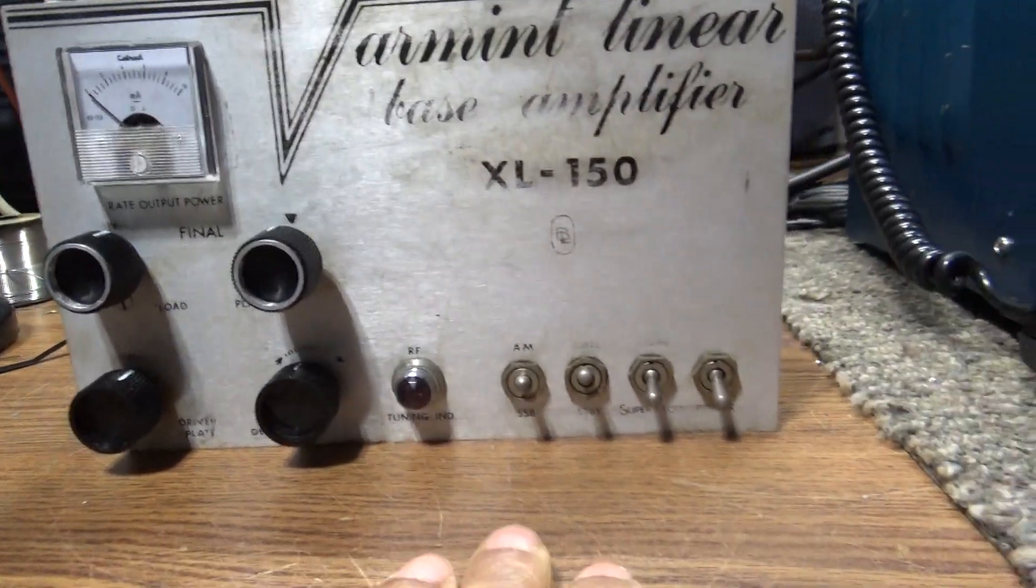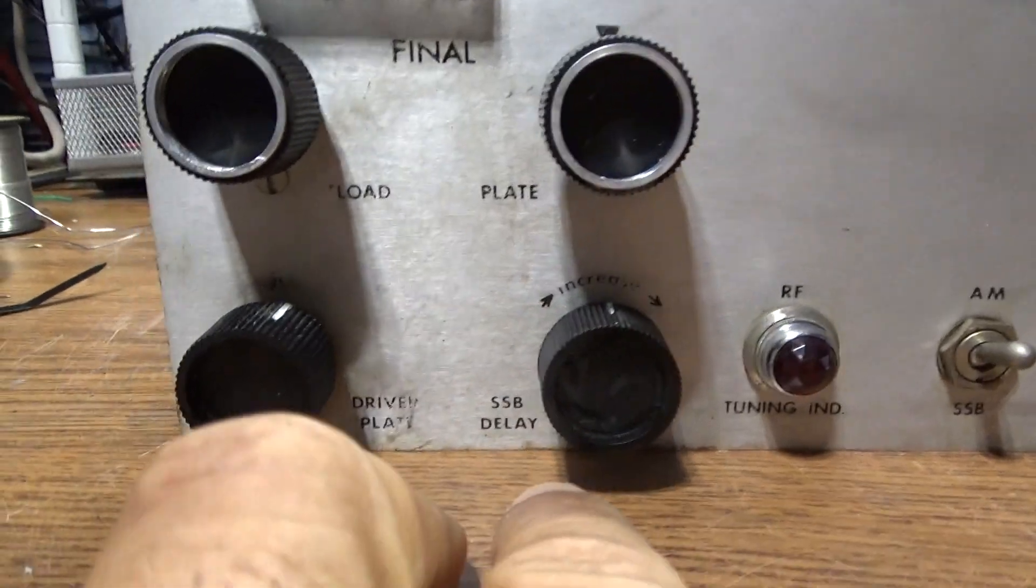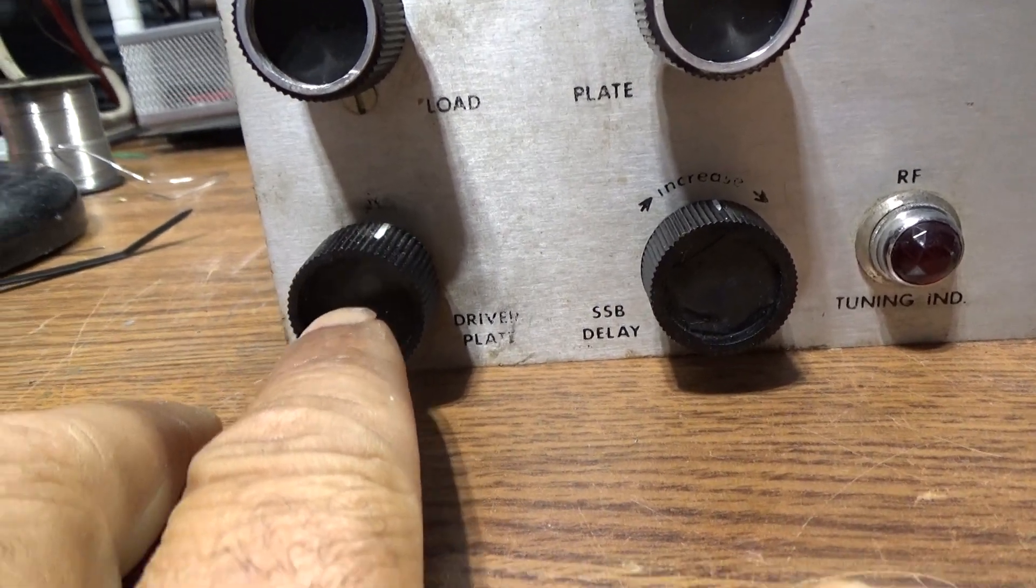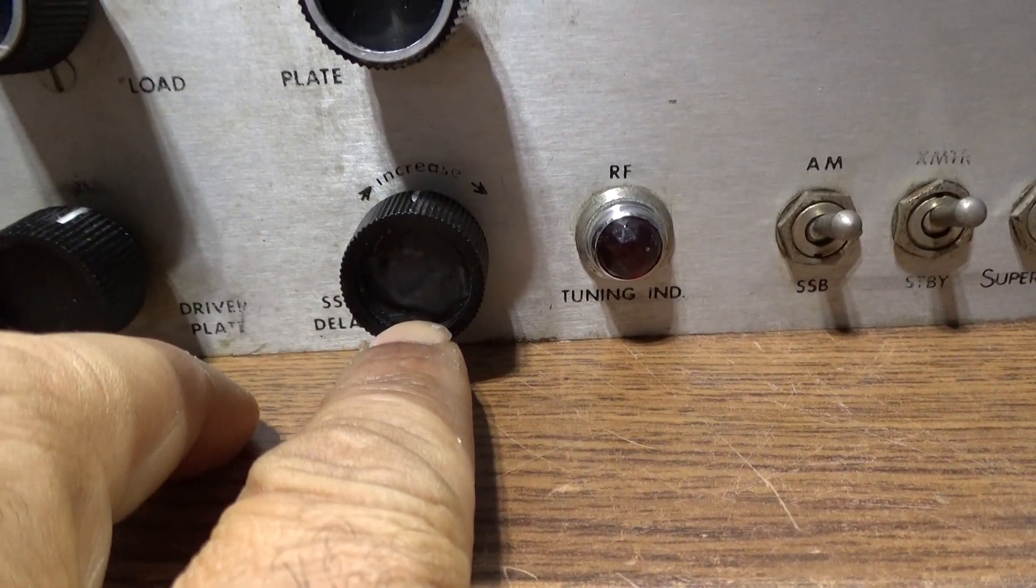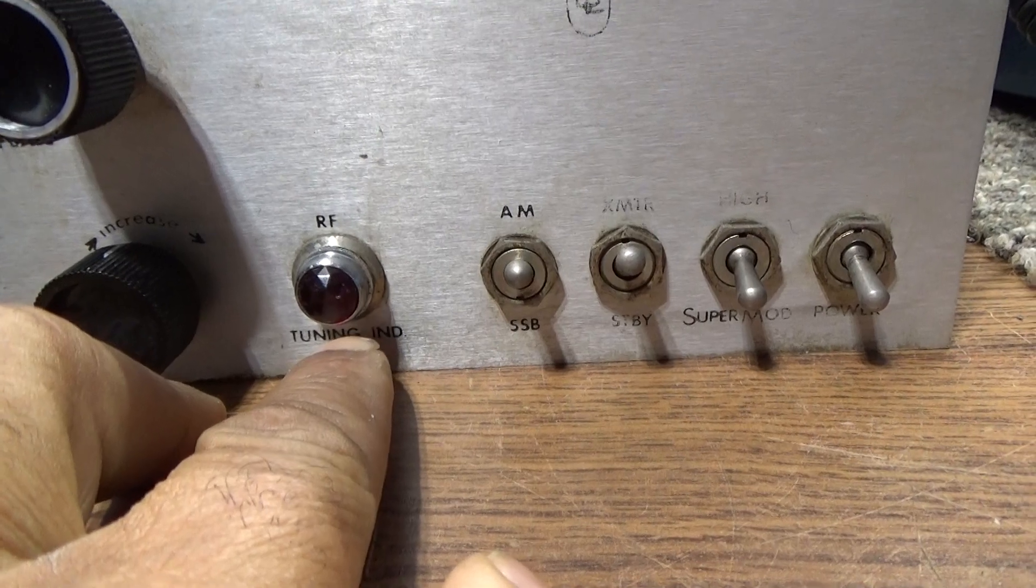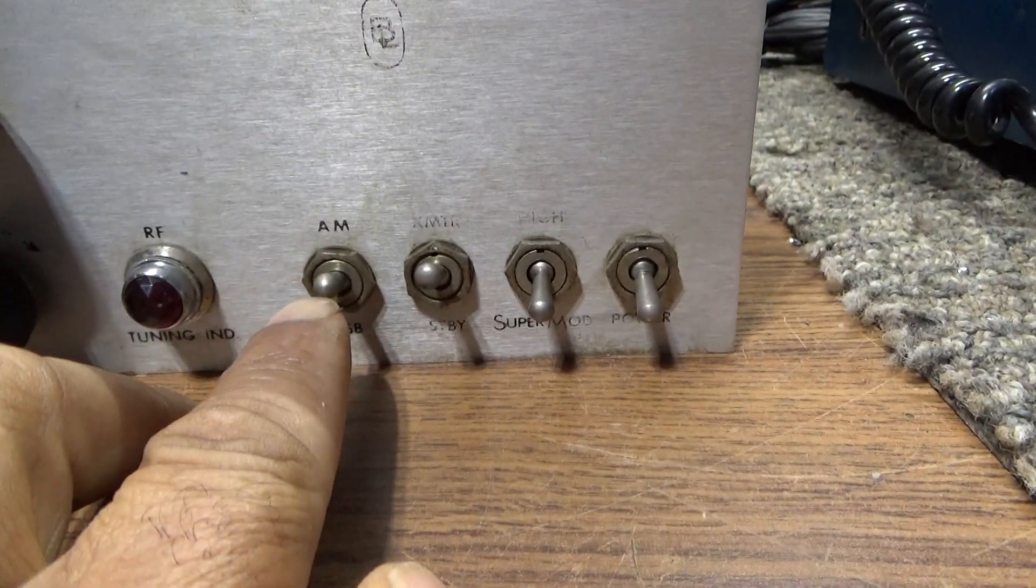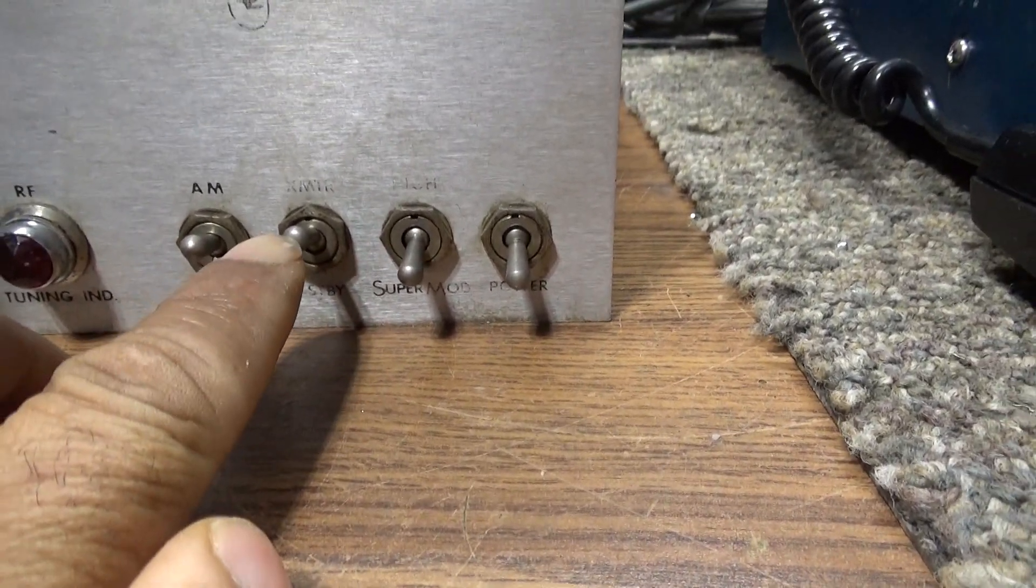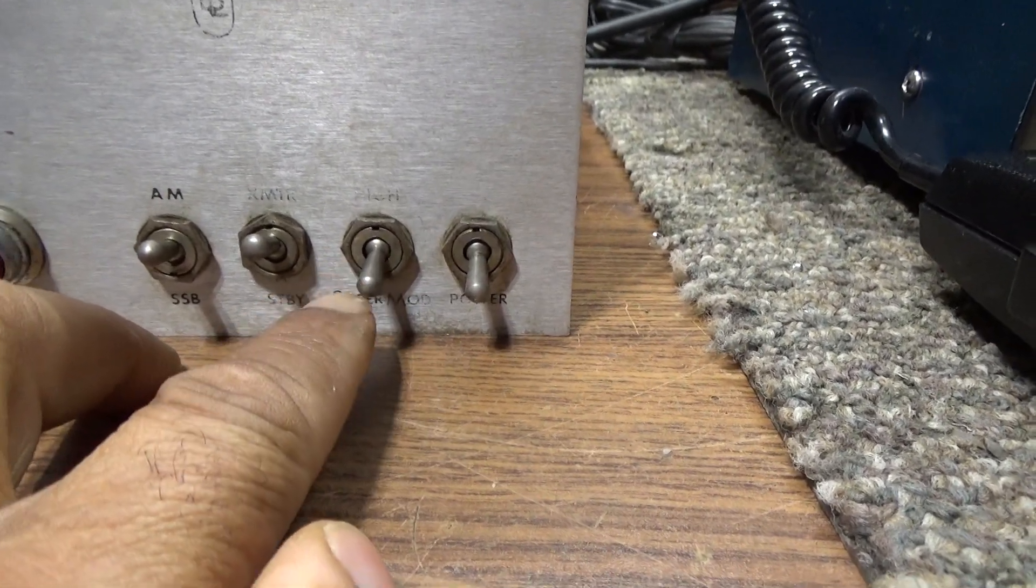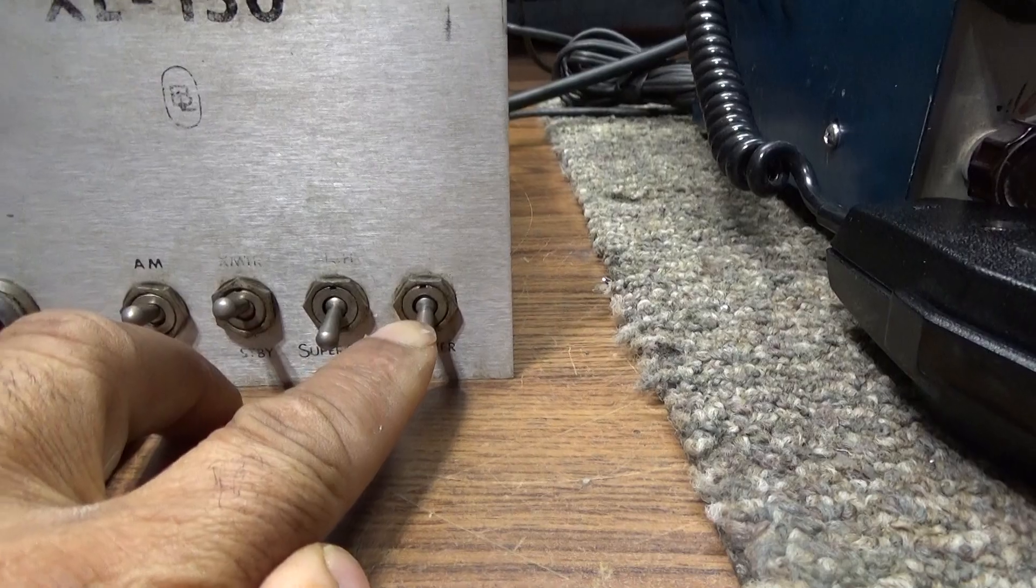One driving one - you've got your final plate tune there, then the load, then driver plate tune. This is a smart delay for SSB to delay the relay. RF power light, AM/SSB switch. Supermod puts more bias on the driver tube for less dead key and swings more. Then power on/off switch.